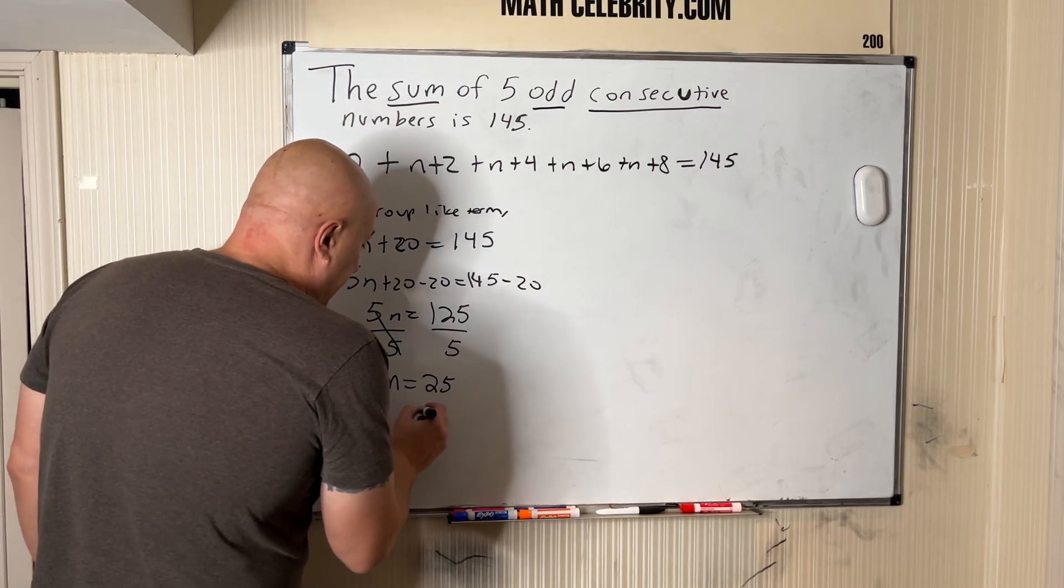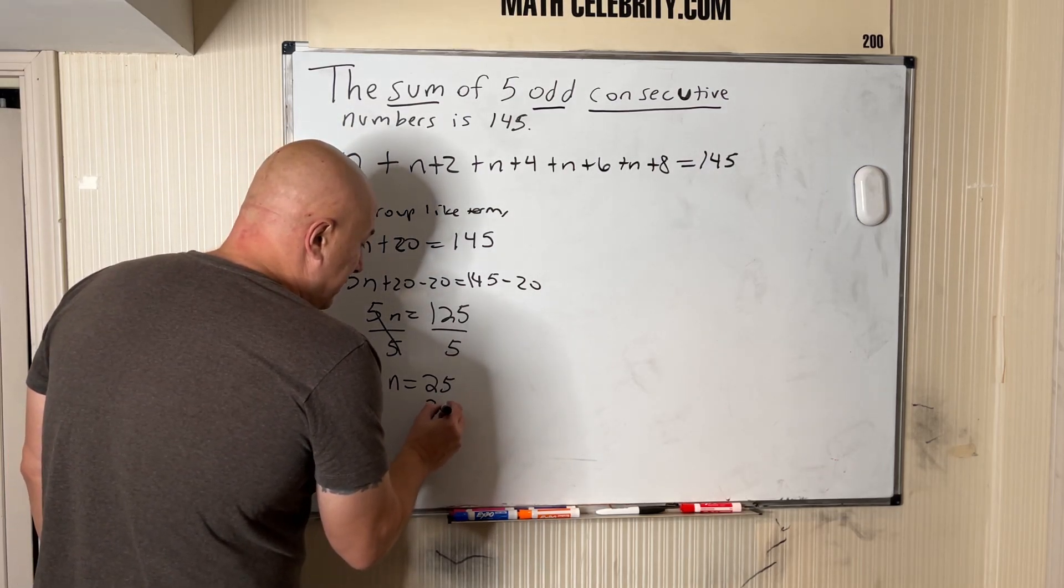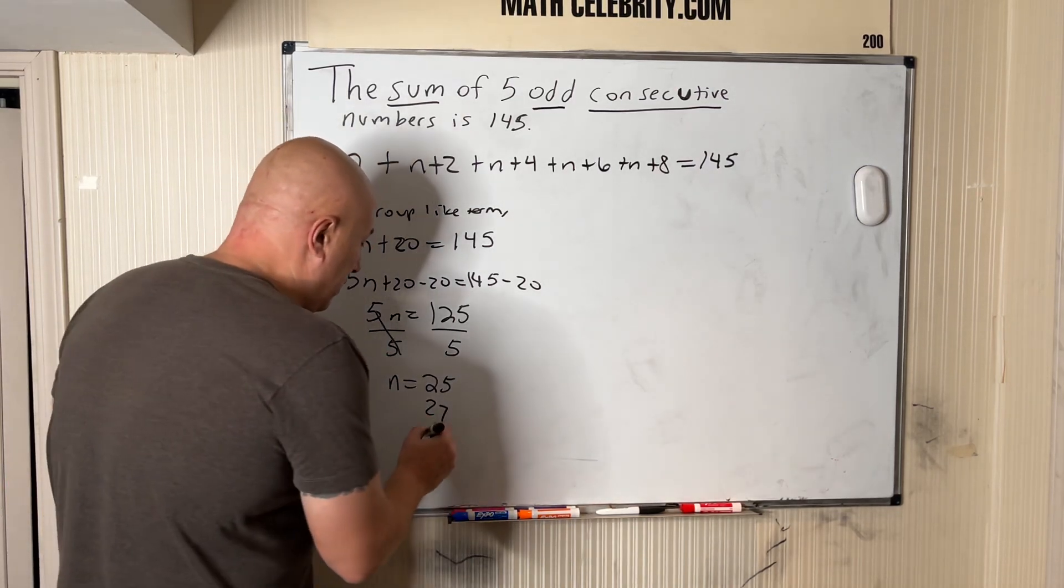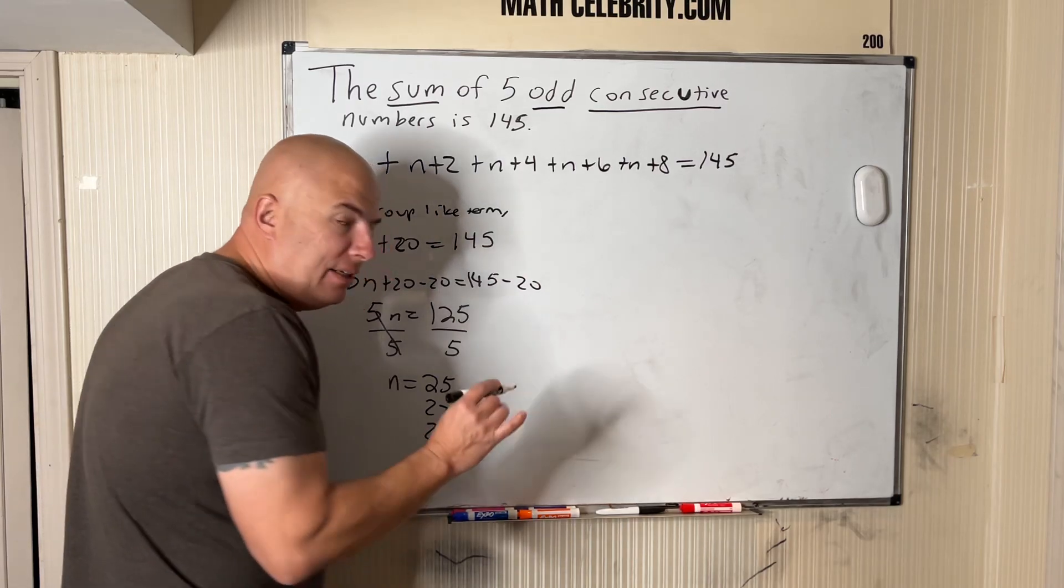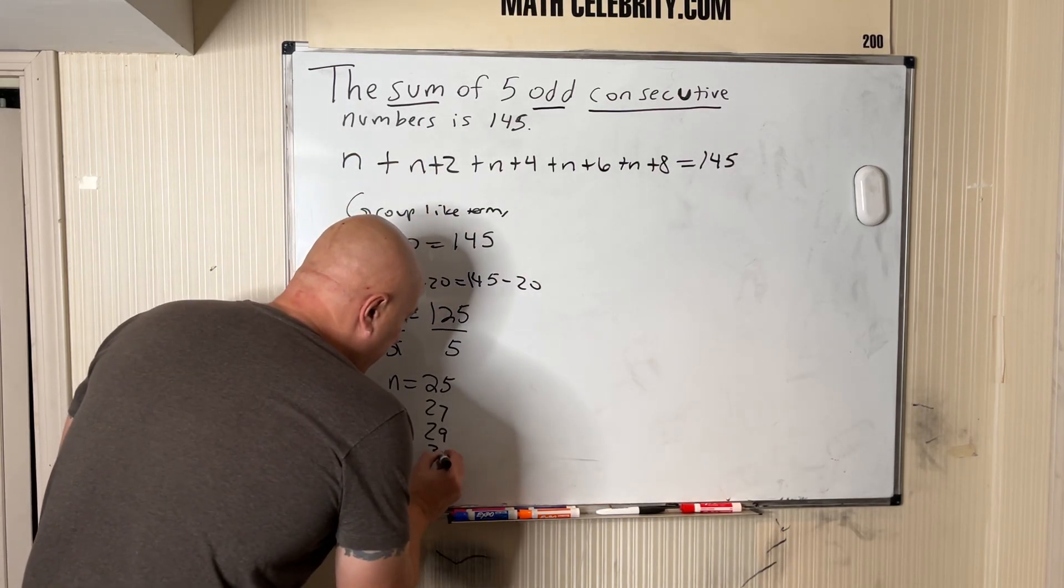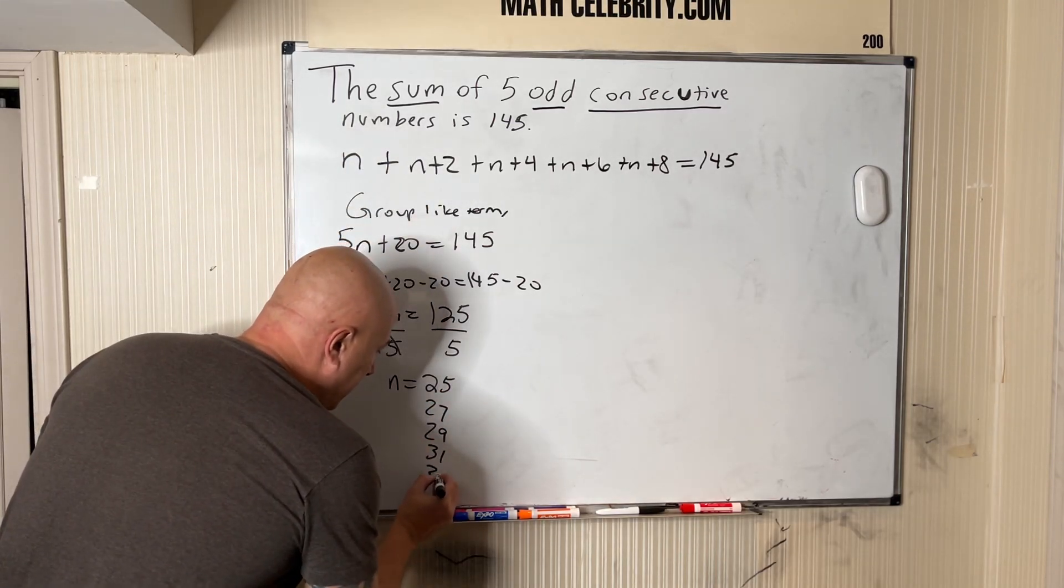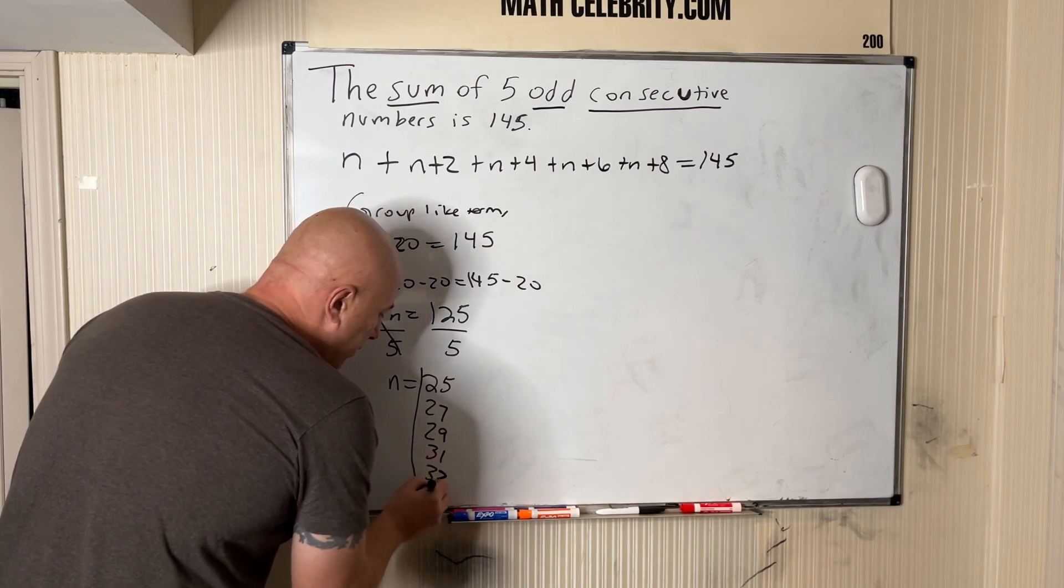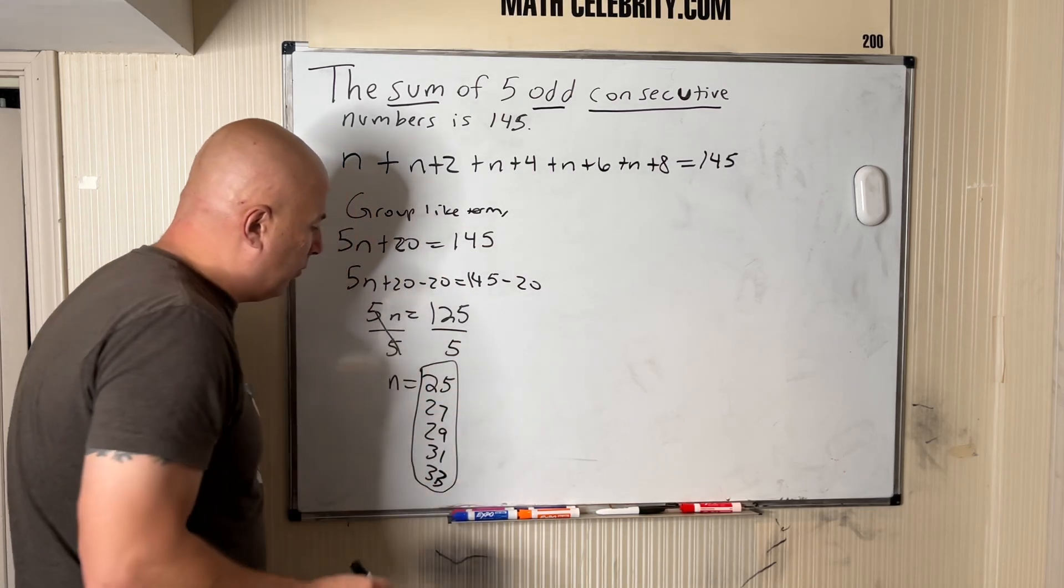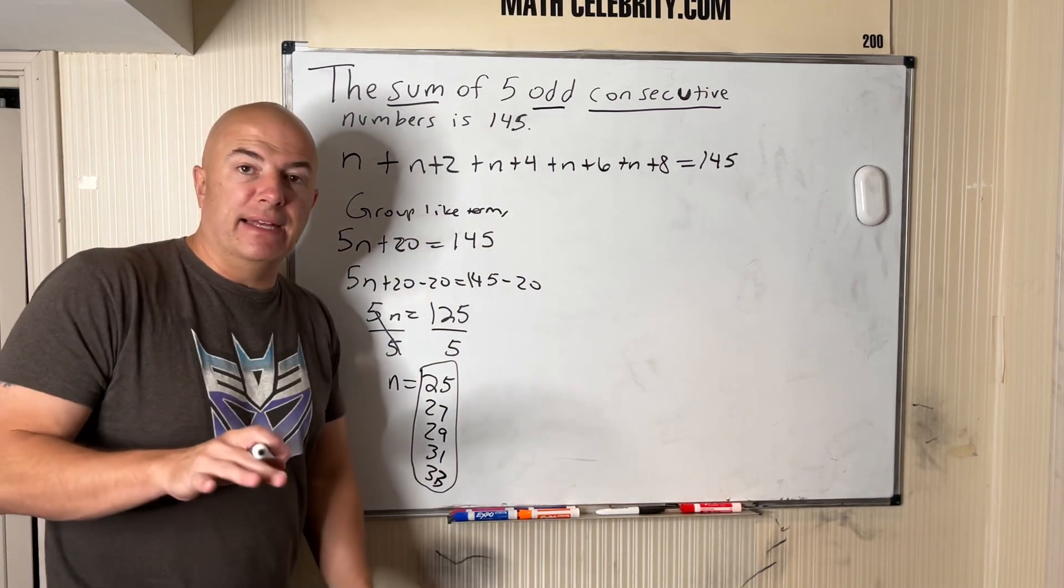Then the next one is going to be 27 because we add two, 29 we add two more, 31 add two more, and then we got one, two, three, four, last one is 33. So if you add all these numbers up, you'll get 145, and that's it.